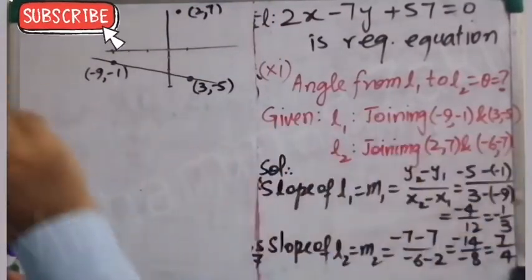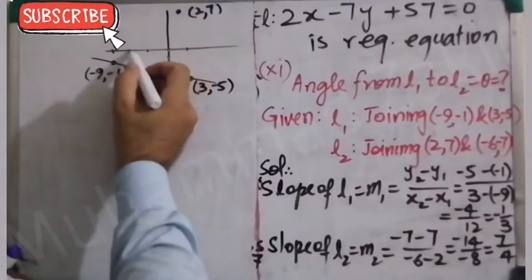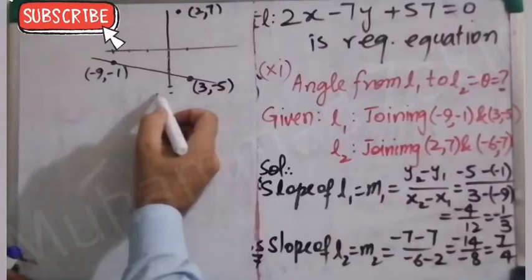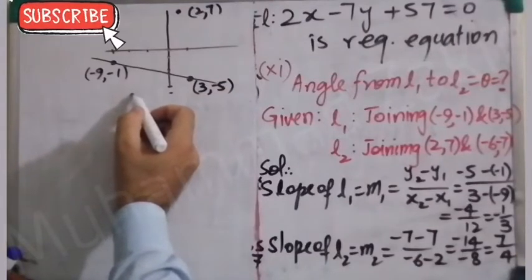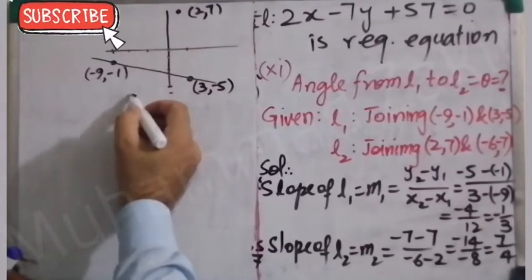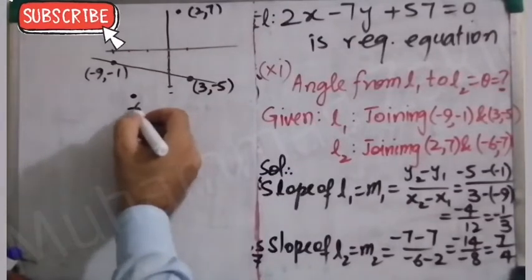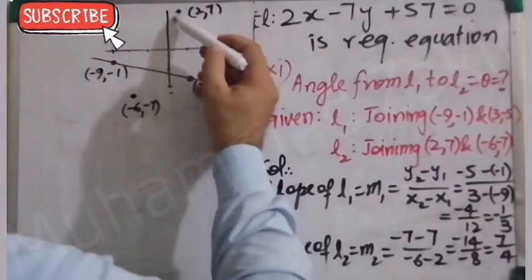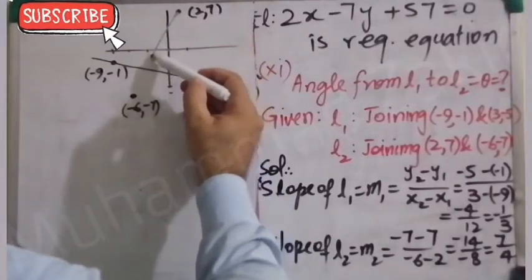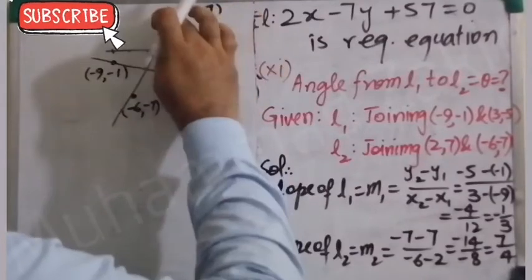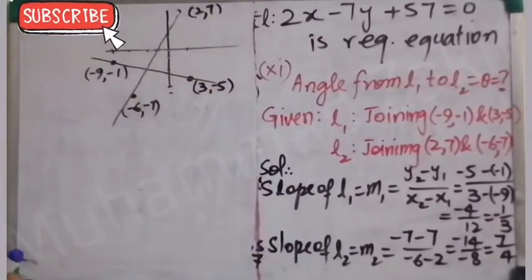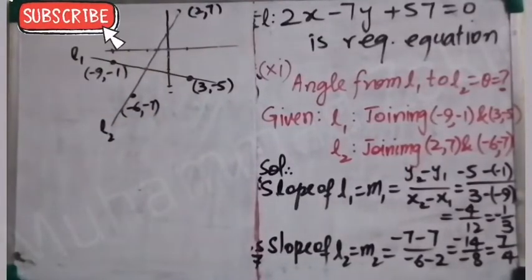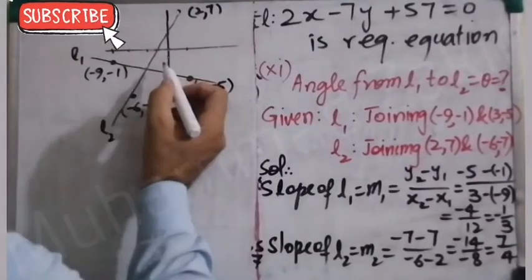The point (-6, -7) will be in the third quadrant: -6 on x and -7 on y, so probably located here. With both points of L2 located, we join them to get L2. This is L1 and this is L2.